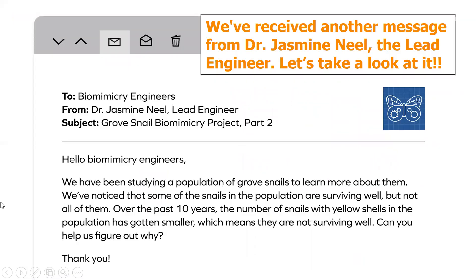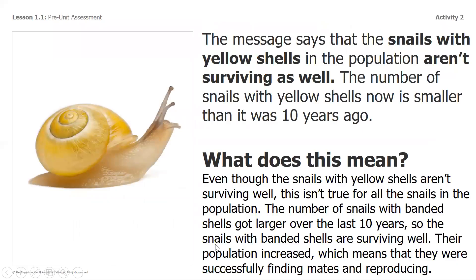We got another message: 'We have been studying a population of grove snails to learn more about them. We've noticed that some snails in the population are surviving well but not all of them. Over the past 10 years, the number of snails with yellow shells has gotten smaller, which means they are not surviving well. Can you help us figure out why?' The snails with yellow shells aren't surviving well, but this isn't true for all snails — the number with banded shells got larger over the last 10 years, meaning they were successfully finding mates and reproducing.